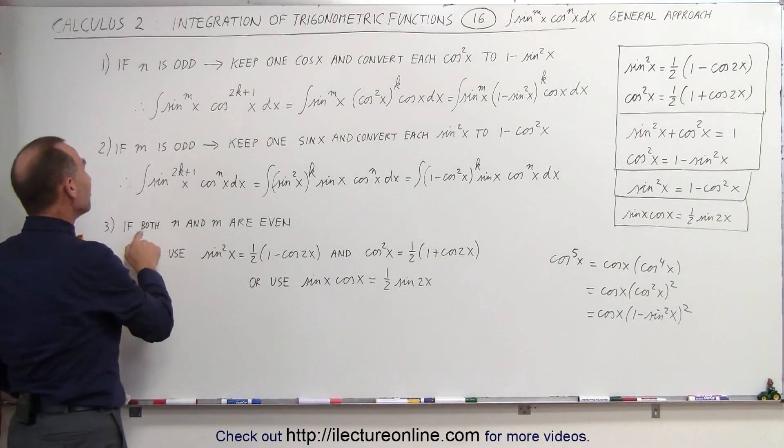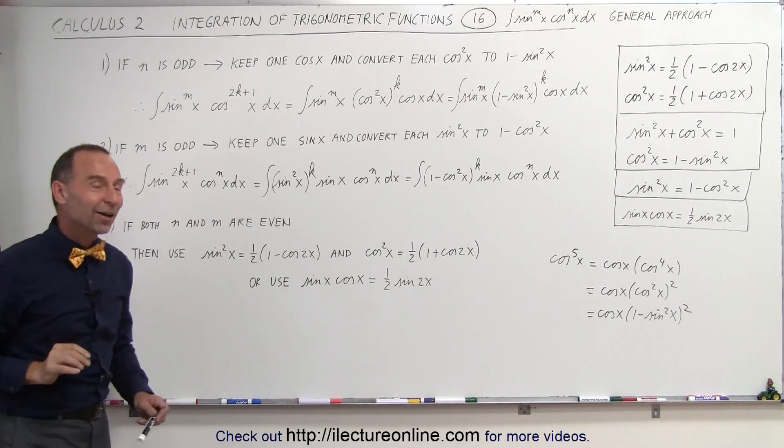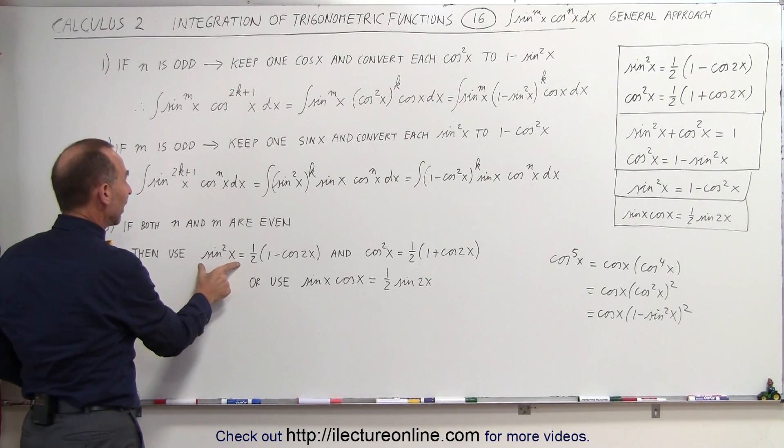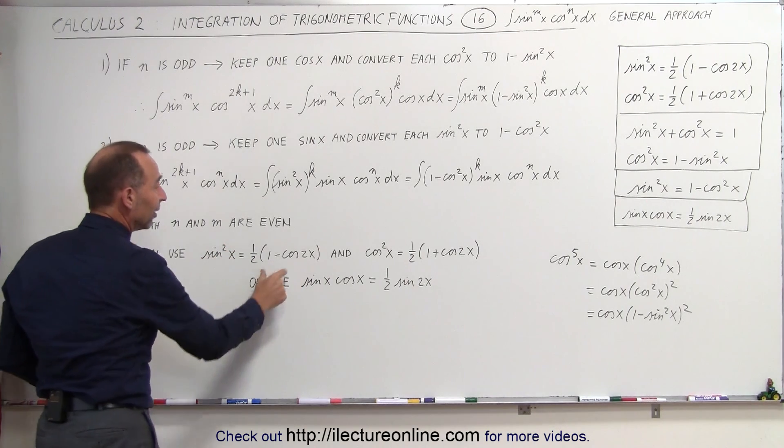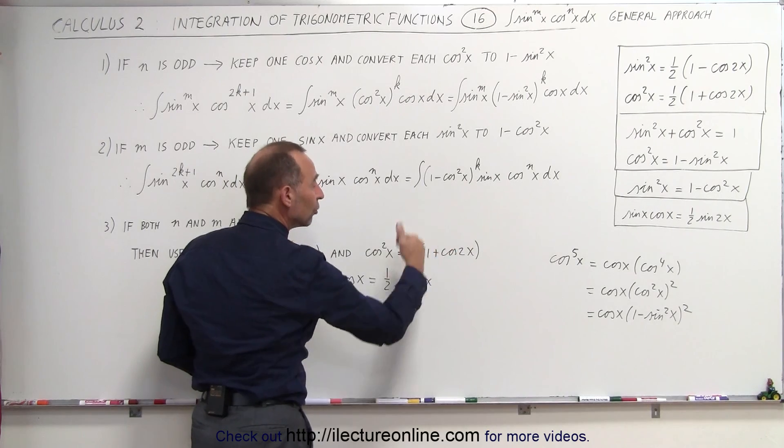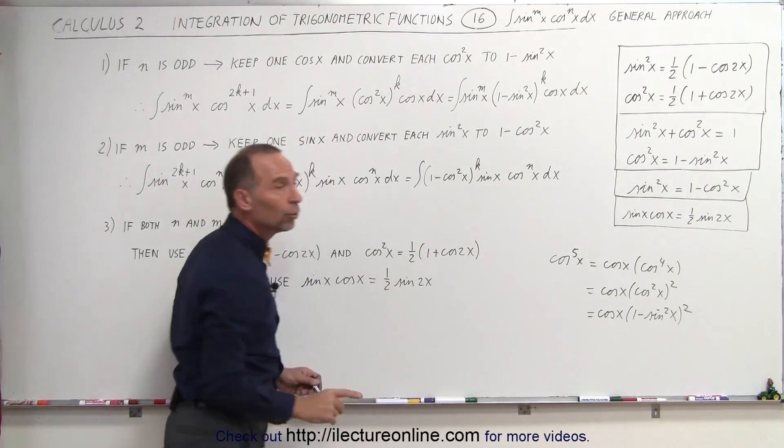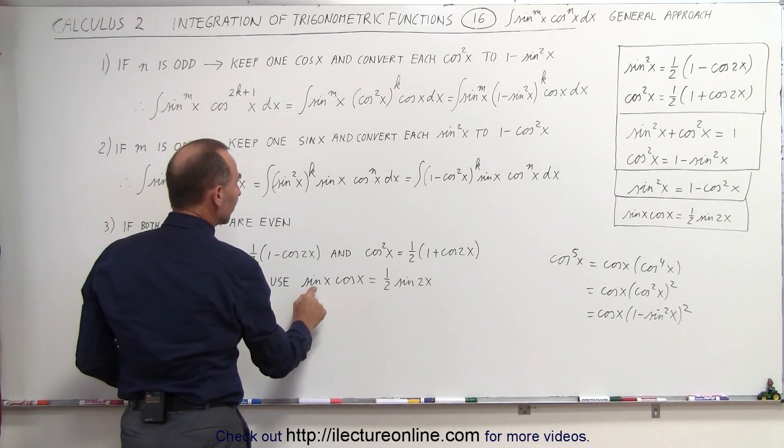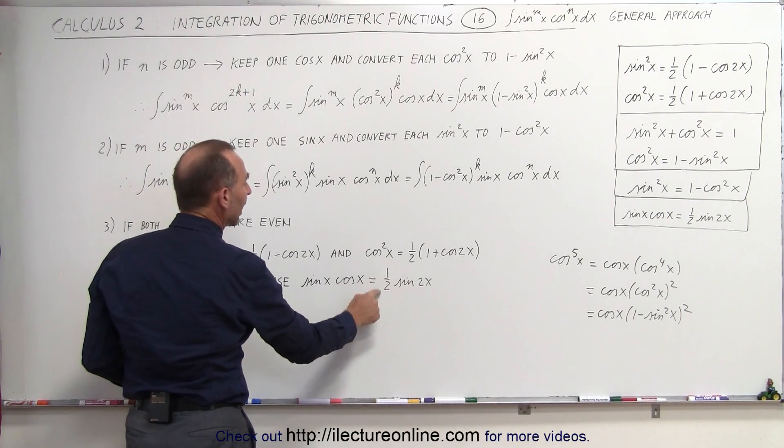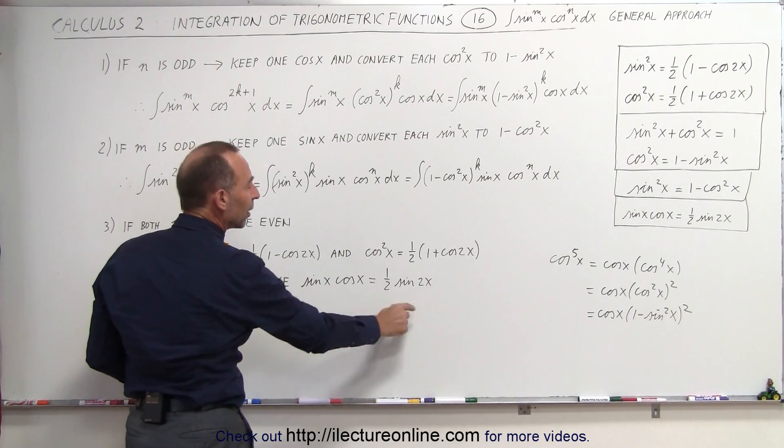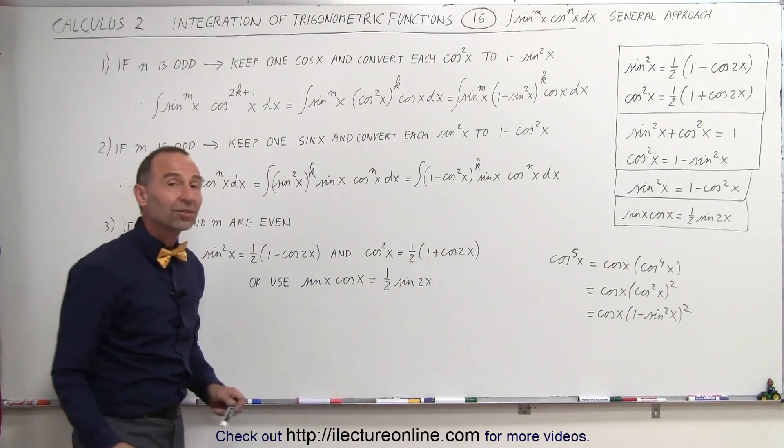Finally, what if both n and m are even, and none of them are odd? What do you do then? Then use the relationship sin²x, because remember that for each sin²x you can write it like this, and for each cos²x you can write it like this, and you continue to simplify it until you have everything to the first power. Or you can use the product of sine times cosine and write as ½sin(2x), and just keep simplifying that until you have nothing but the sine of 2x.